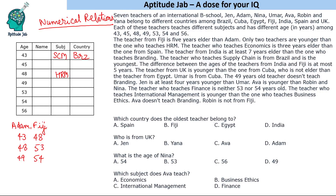The teacher who teaches economics is 3 years elder than the one from Spain. Finding a difference of 3 in the ages: if Spain is 45, economics would be 48. Another case is 53 and 56. But 48 is already assigned to HRM, so that case is not possible. We get only one valid case: 53 is from Spain, and the 56-year-old teaches economics.